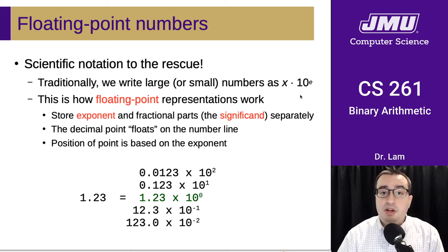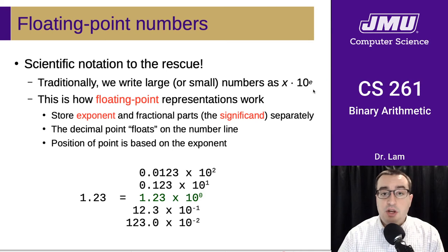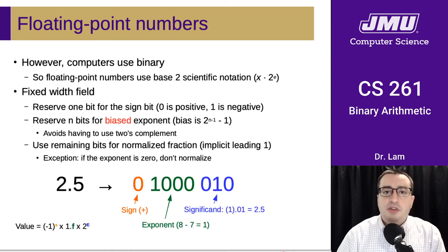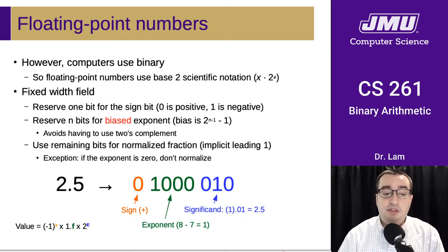So, it's going to be some number times the base raised to some exponent. And you may remember from chemistry or physics or biology class that this is how you wrote very large or very small numbers. And what this does is it allows us to store that exponent part and the fractional part, or the significand, separately. And we can store them using different representations that allows us greater flexibility in storing the range or the exponent. And so, the reason we call this floating point is because the decimal point floats on the number line. And the position of the point is based on the exponent. Because computers use binary, we're going to be using a base of 2 rather than a base of 10.